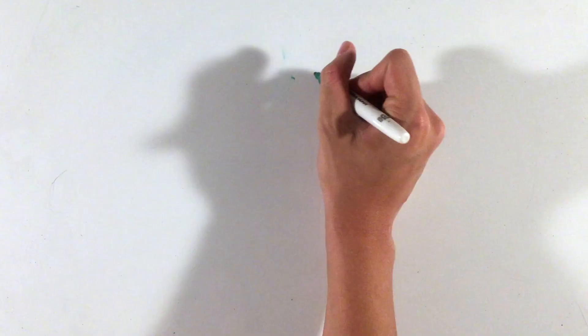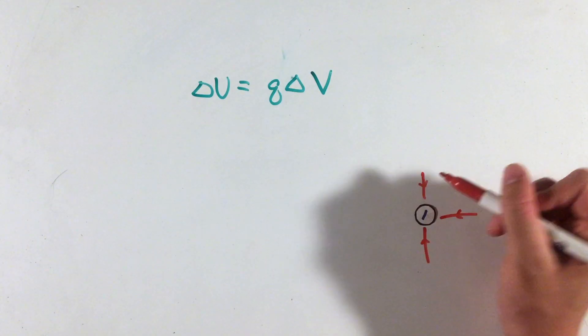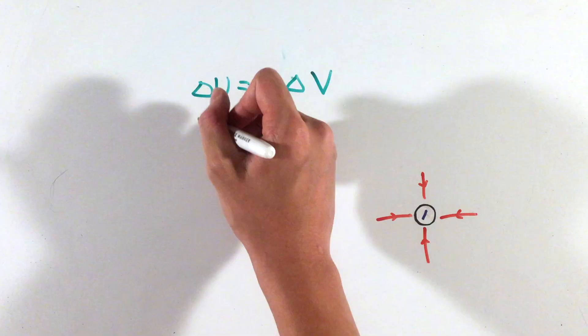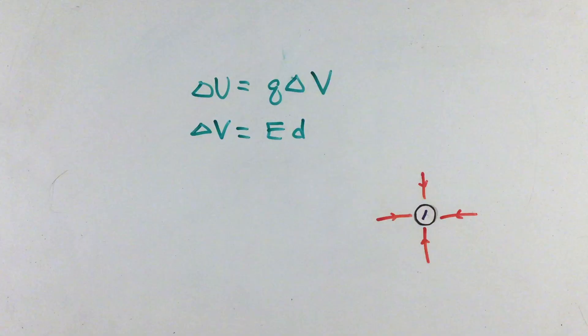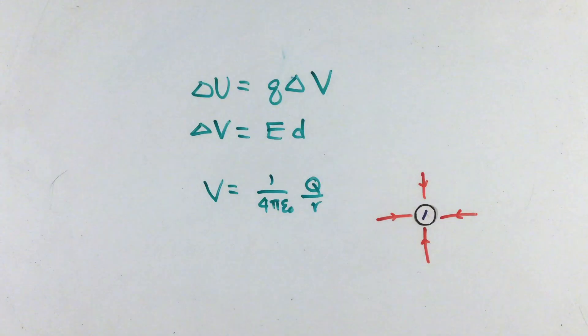Another new idea related to these electric fields is electric potential V. Charges gain or lose electric potential energy when they experience electric potential changes, given by this equation here. In addition, the relationship between the potential difference felt by a charge moving through a constant electric field is simply the electric field times the distance traveled. Finally, the electric potential due to an isolated charge q is given by this equation here.